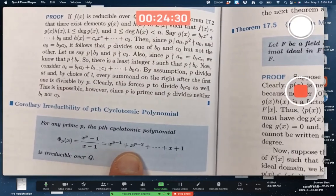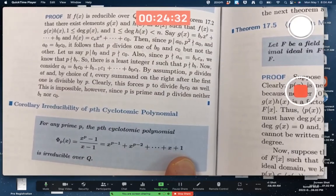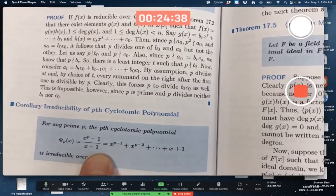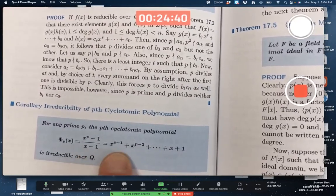This is called the p-cyclotomic polynomial, or cyclotomic polynomial. Notice, this thing doesn't look like a polynomial, does it? That's a polynomial.